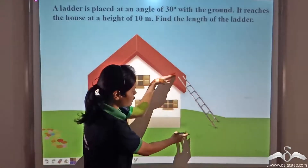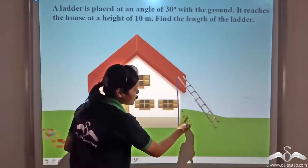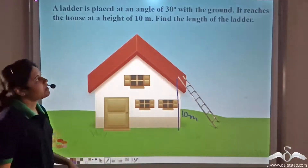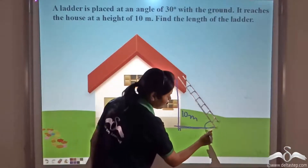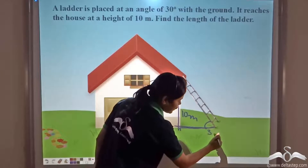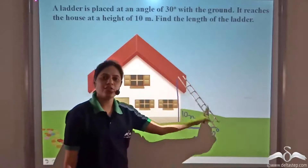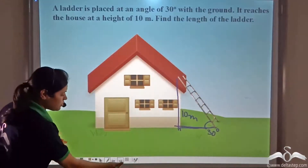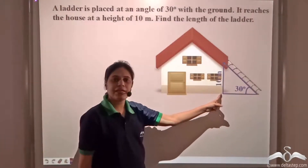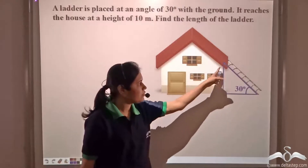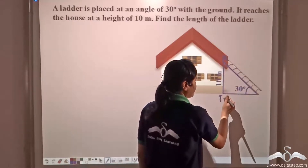We have this ladder reaching a height of 10 meters, and it makes an angle of 30 degree with the ground. We label the triangle as A, B, C, where the height is 10 meters and we need to find the length of the ladder.